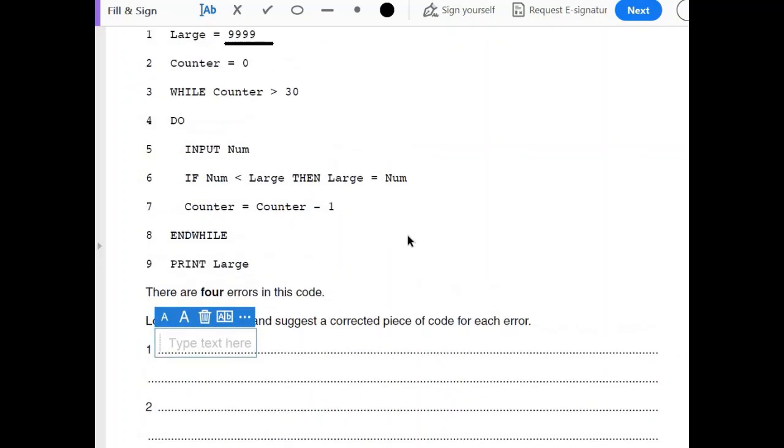So let's start. Large equals 9999. Okay, this has to be an error because we only initialize the smallest value with a big number. We do not initialize large or maximum value with a big number, we initialize it with zero. So this is our first error, error number one, and we'll simply write it as is and then we would suggest a correction.